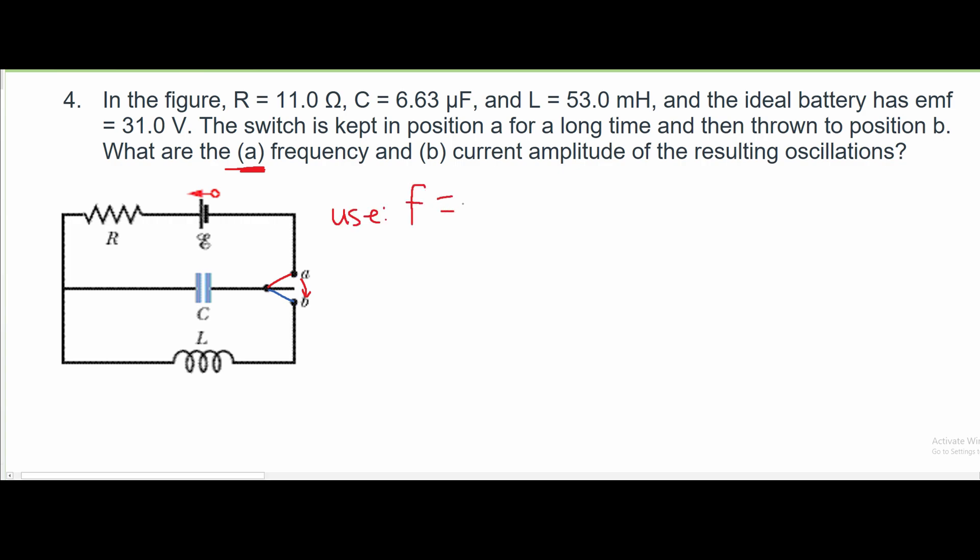We have F equals omega over 2 pi. However, we're not given an omega, so we're going to have to use this next formula, which is 1 over 2 pi square root of LC.